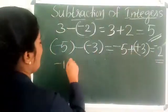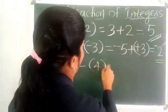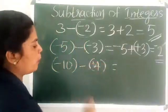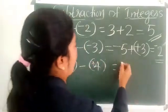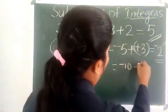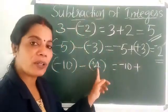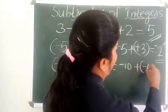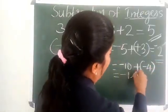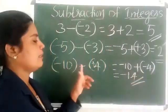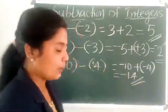Consider another example: minus 10 minus 4. Here, 4 is a positive integer. Minus 10 minus 4 — add the additive inverse of positive 4, which is negative 4. Therefore, minus 10 plus minus 4 equals minus 14.